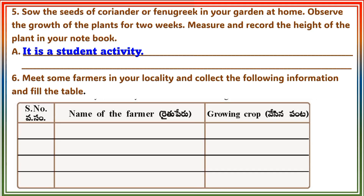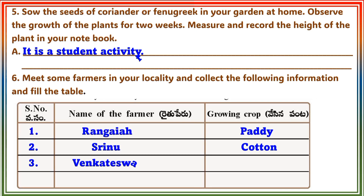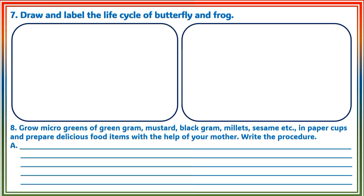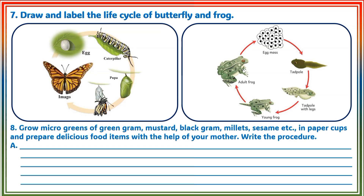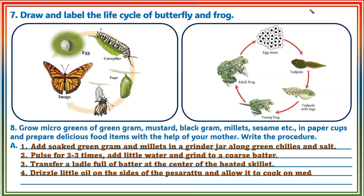Question 6: Meet some farmers in your locality and collect the following information and fill in the table. Question 7: Draw and label the life cycle of butterfly and frog. Question 8: Grow microgreens of green gram, mustard, black gram, millets, sesame, etc. in paper cups and prepare delicious food items with the help of your mother. Write the procedure.